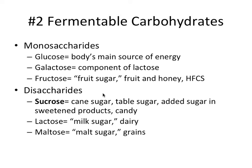Sucrose is by far the worst for caries because not only does it contribute to acid production, but strep mutans can use sucrose to make sticky glucan. Strep mutans converts sucrose into this glue that holds plaque onto our teeth and makes it much more difficult to remove with brushing. It also provides an energy store — an intracellular polysaccharide — for bacteria that they can use later. And sucrose is the sweetest sugar, found in most candy, also referred to as cane sugar or table sugar. So this is by far the worst one for dental cavities.